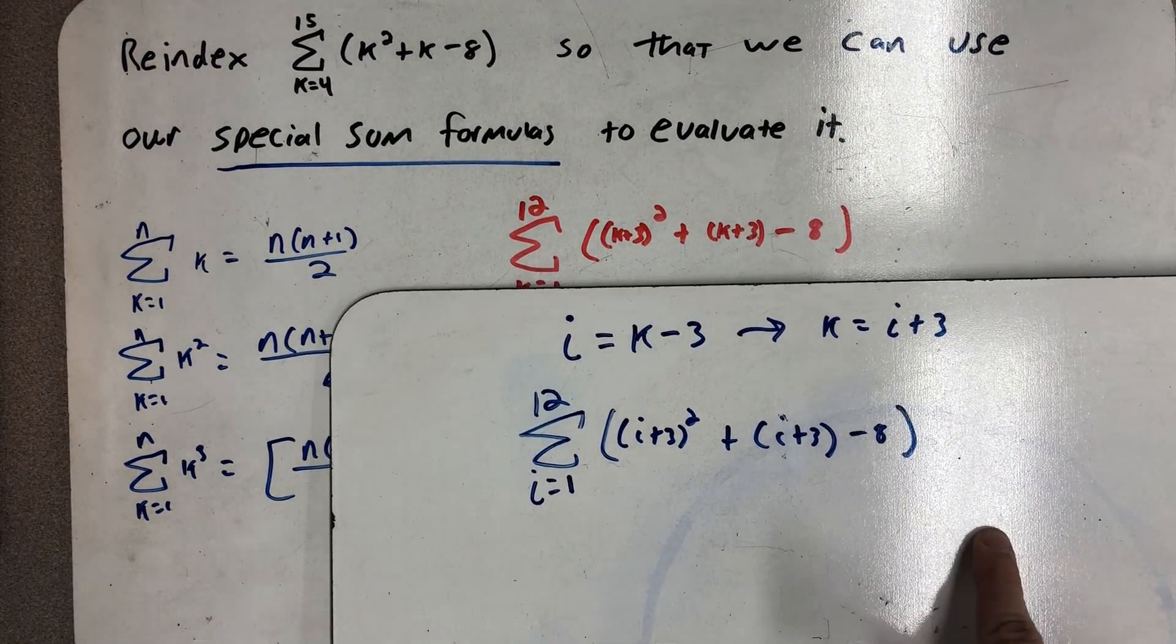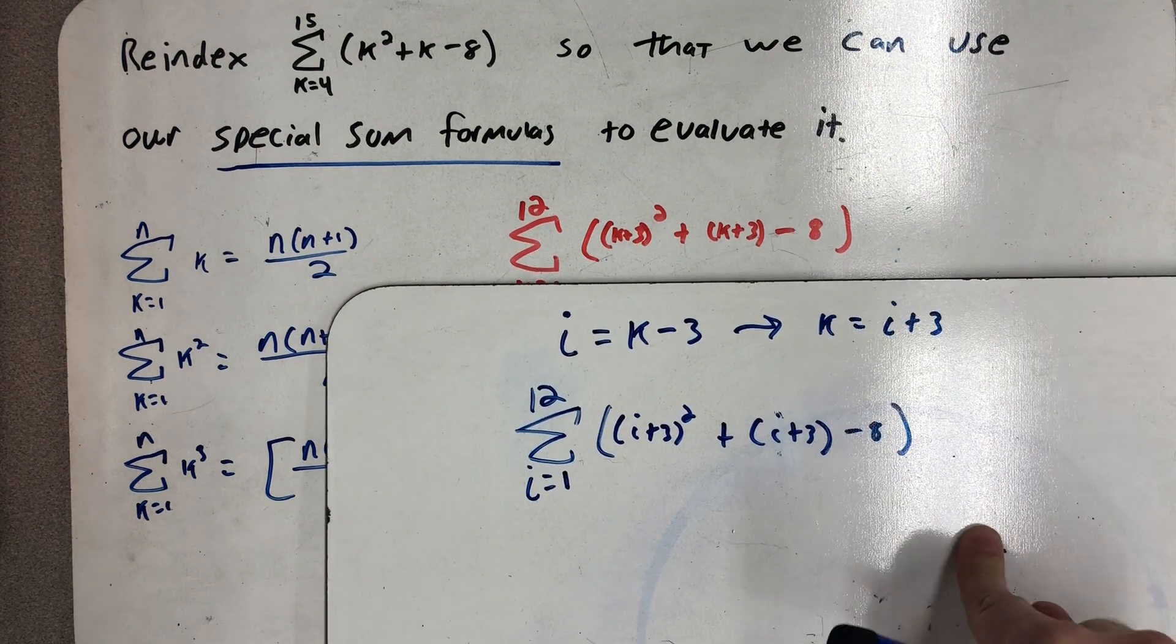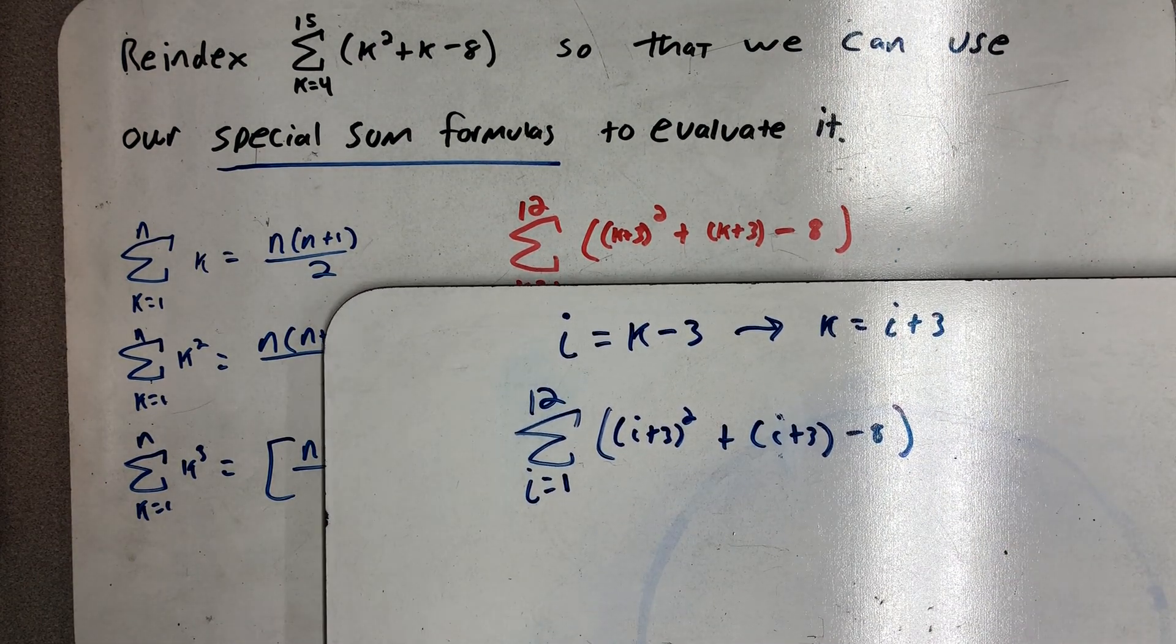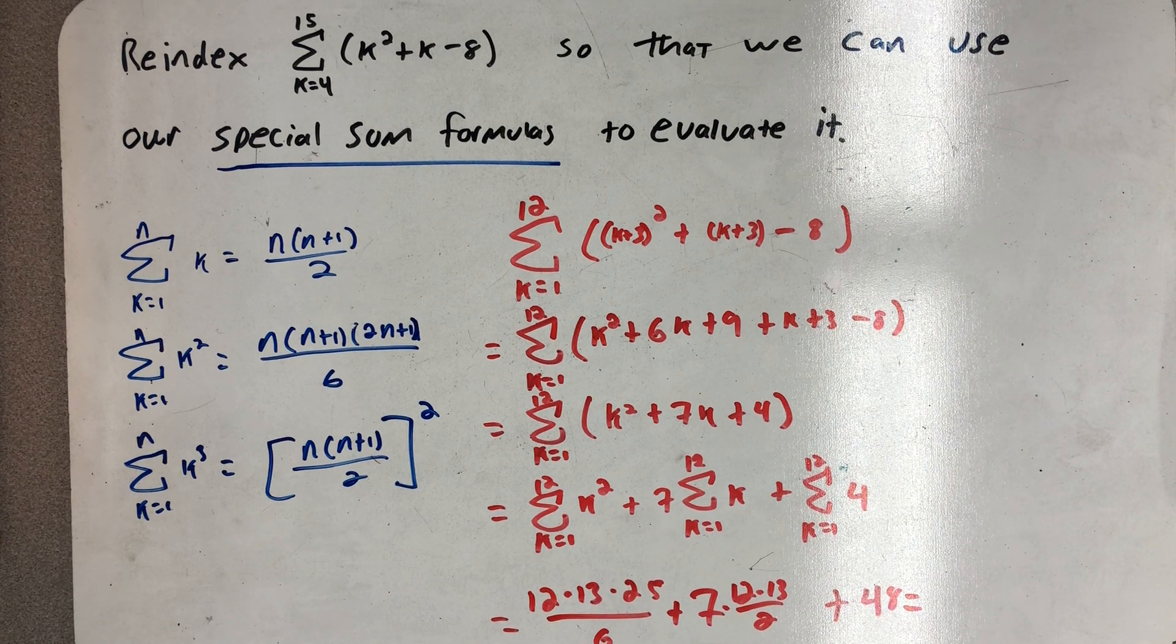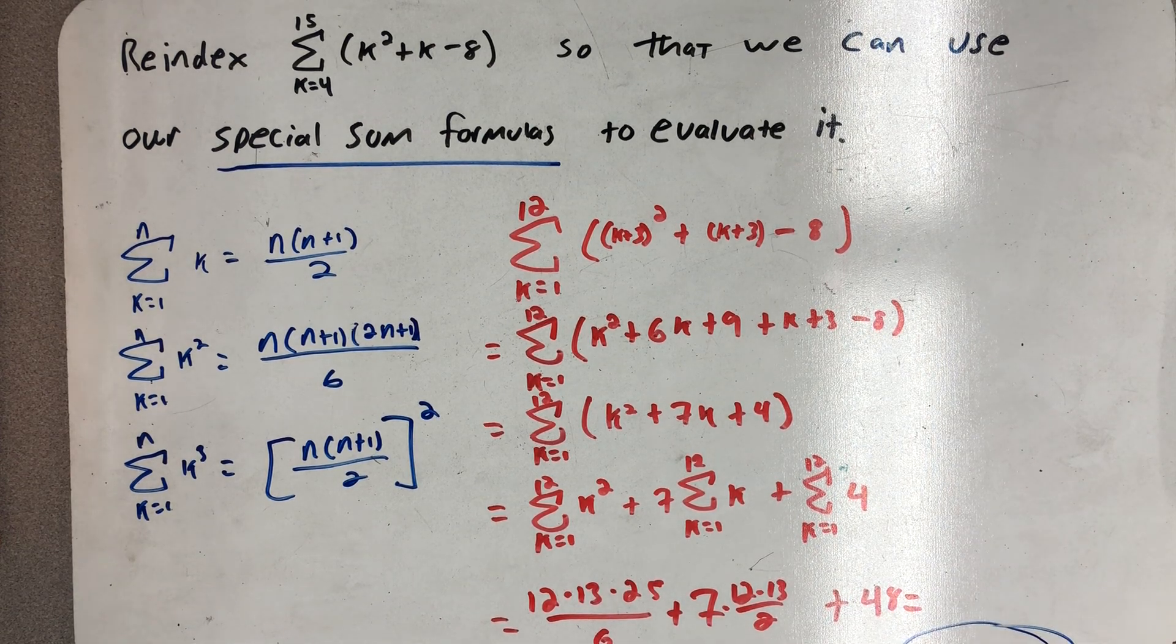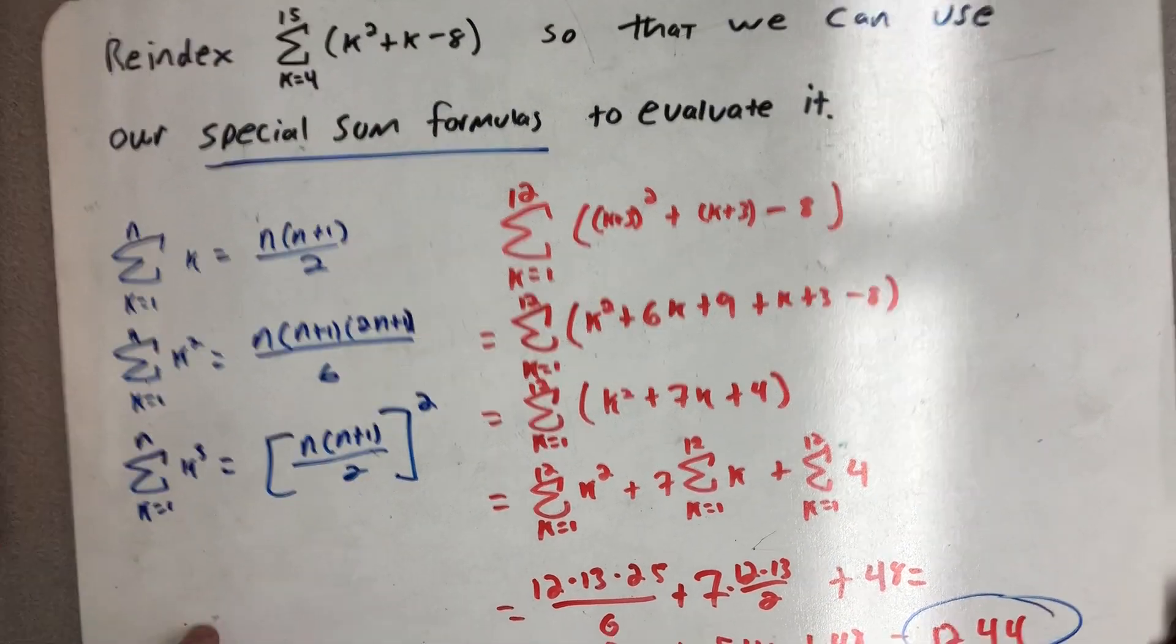And it doesn't matter what I call my index. So this is in fact the same sum that we have written down right here, but found through substitution rather than just thinking our way through it. But regardless, we'd be able to use our special sum rules and get 1,244.